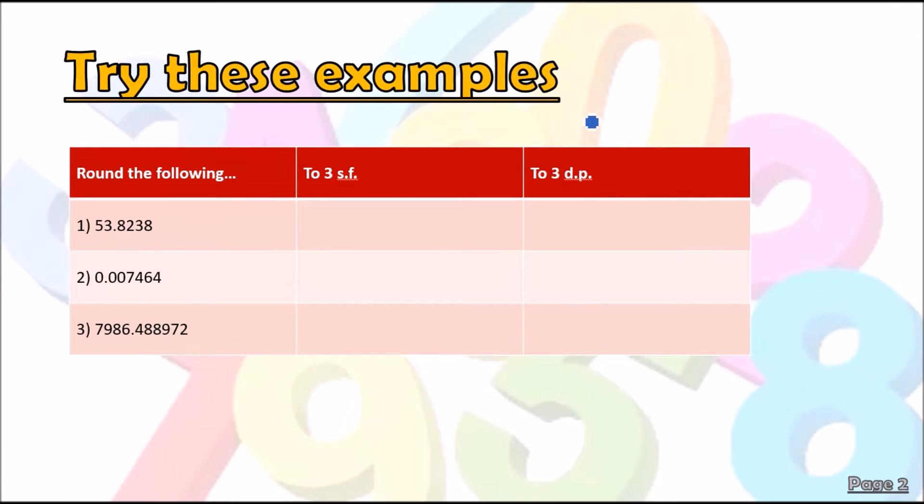So first things first, round to three significant figures. Well, again, look at the first three numbers and we look at the decider, which is the two. As it's less than five, it's just going to be 53.8.